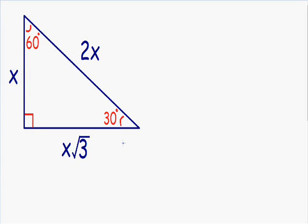Welcome to part one of my special right triangle videos. In this video we're going to go over a 30-60-90 triangle. The reason why a 30-60-90 triangle is called a special right triangle is because the length of the longer sides are proportional to the length of the shorter sides.